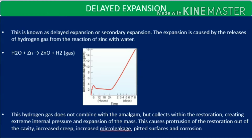Delayed expansion is caused by the release of hydrogen gas from the reaction of zinc with water. The chemical reaction: zinc and water form zinc oxide with liberation of hydrogen gas. This hydrogen gas does not combine with amalgam but collects within the restoration, creating extreme internal pressure and expansion of the mass, causing protrusion of the restoration out of the cavity, increased creep, increased micro leakage, pitted surfaces, and corrosion.